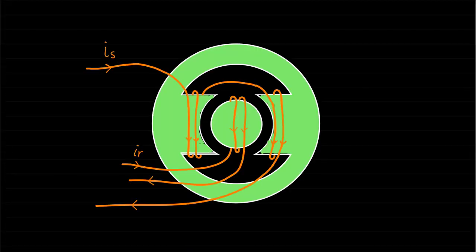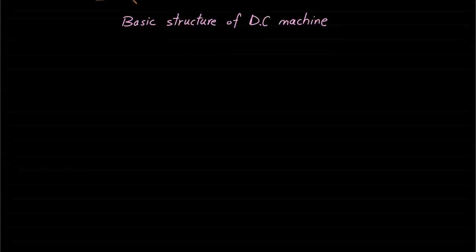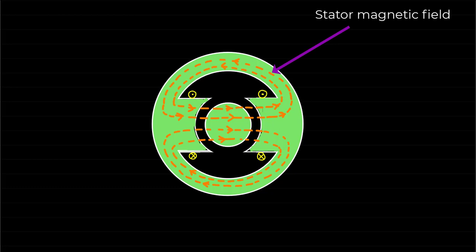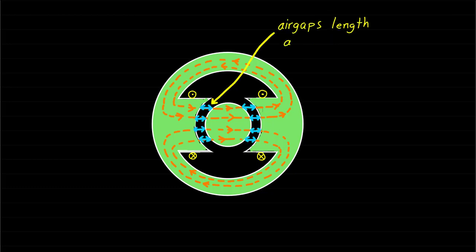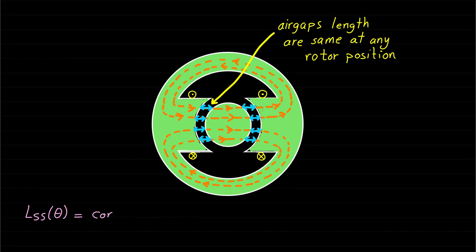The last example is a cross-section structure consisting of a salient pole stator and cylindrical rotor, representing the basic structure of a DC machine. Note that we are not studying the operation principle of the DC machine here; we are investigating this cross-section geometry. Based on this machine geometry, the stator self-inductance is constant with respect to rotor position. The stator magnetic field sees the same air gap at any rotor position, which is why the stator self-inductance does not change with rotor position.